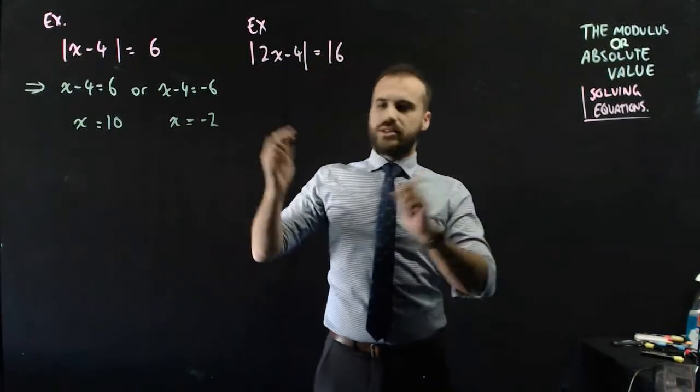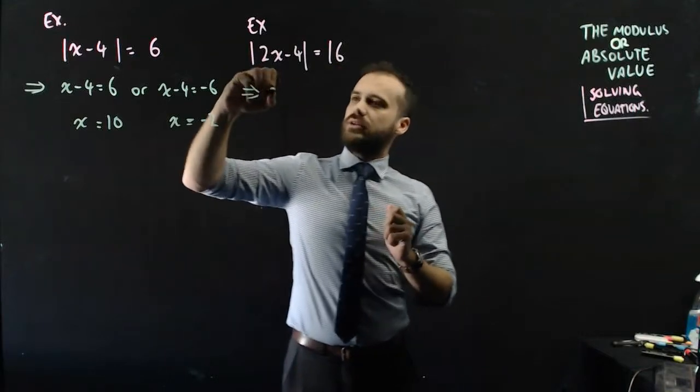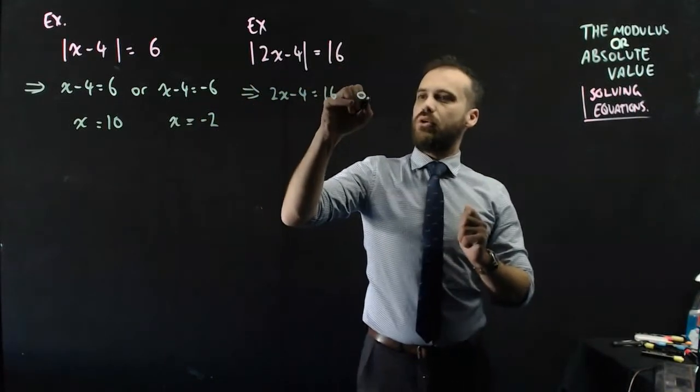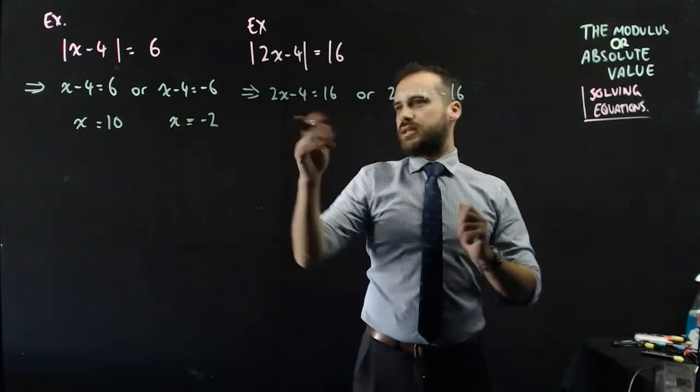Same with this one here, just a bit more work. This implies that 2x minus 4 equals 16, or 2x minus 4 equals negative 16.